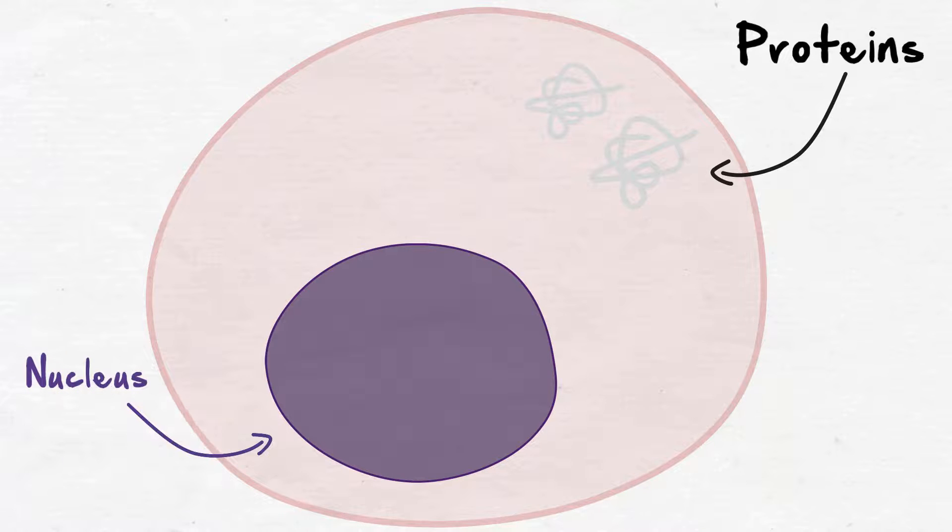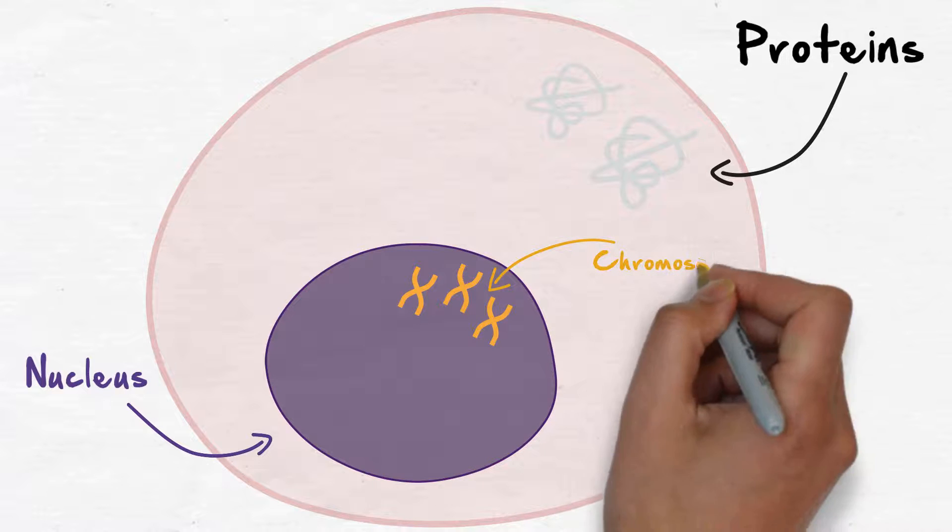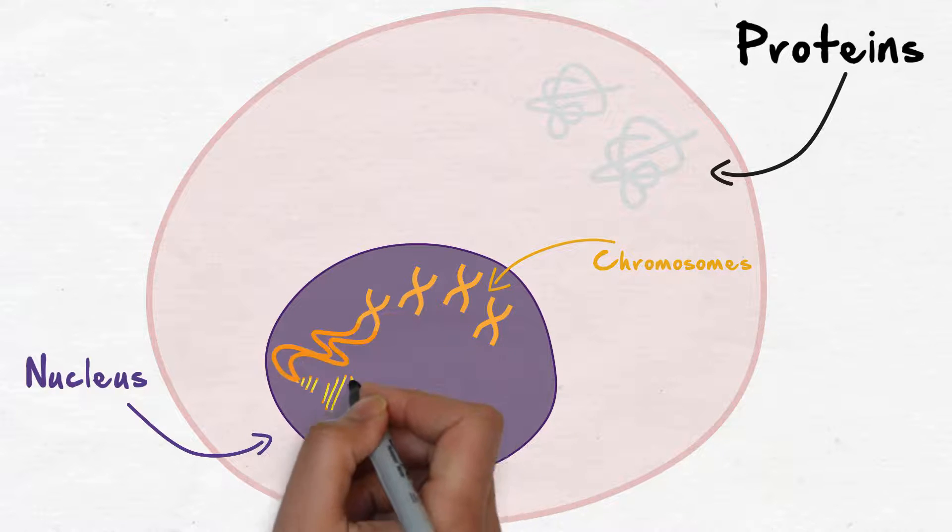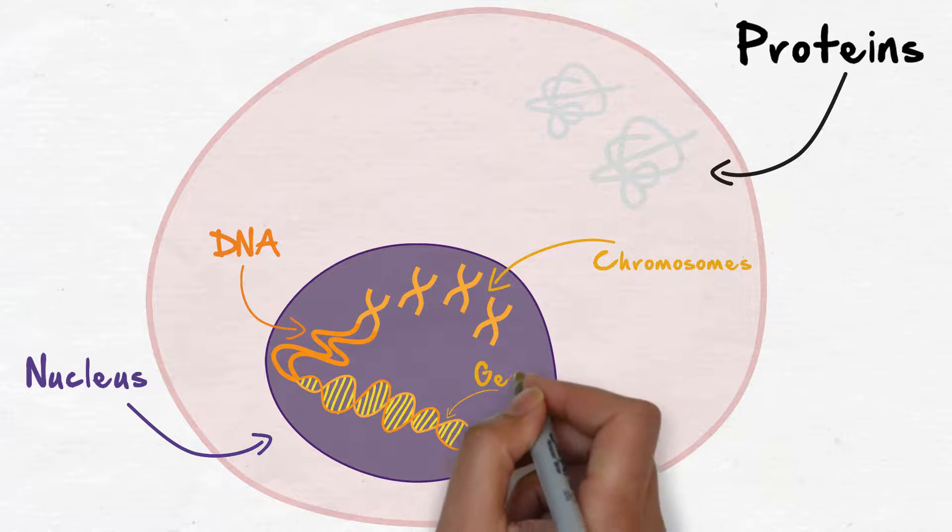Inside each cell is a nucleus, which holds unique genetic information, coiled up inside chromosomes. Unraveling a chromosome reveals spirals of DNA, where specific genes and their codes are stored.